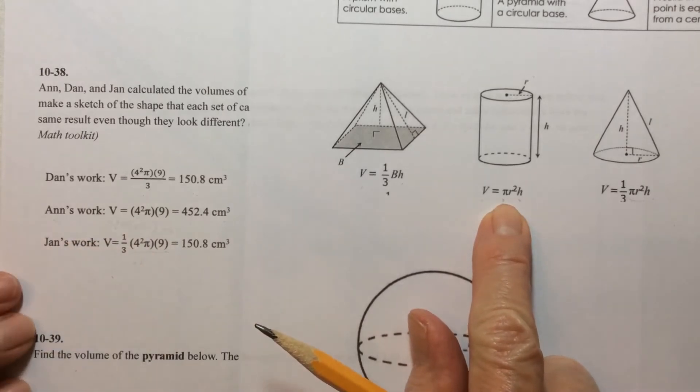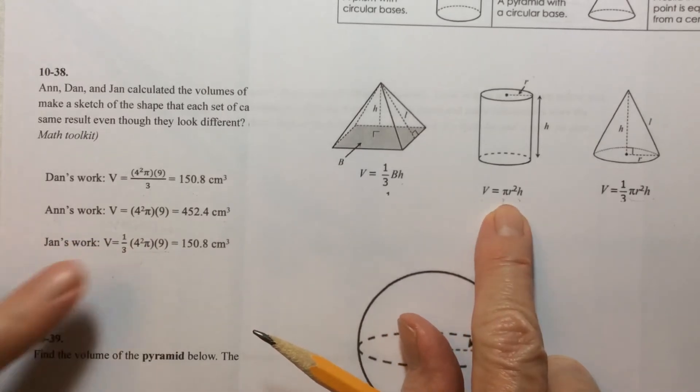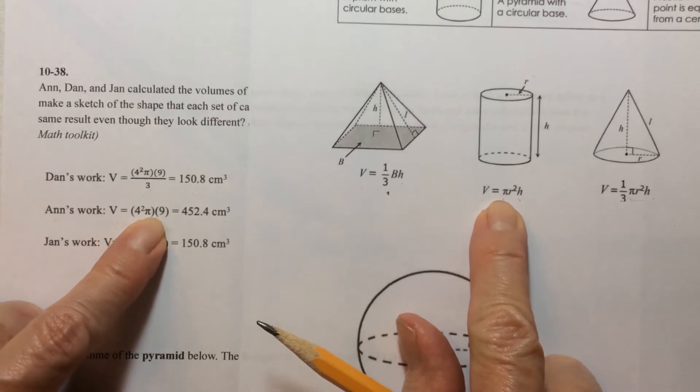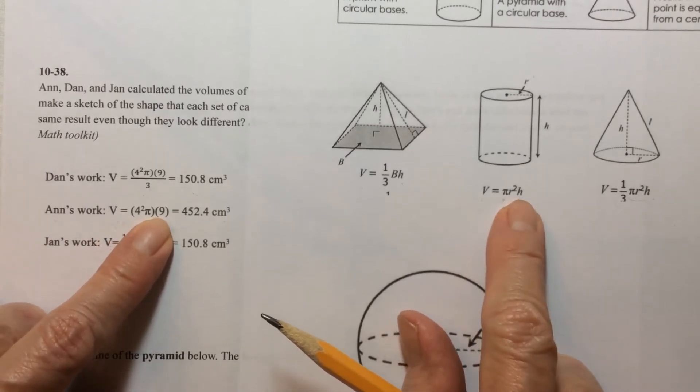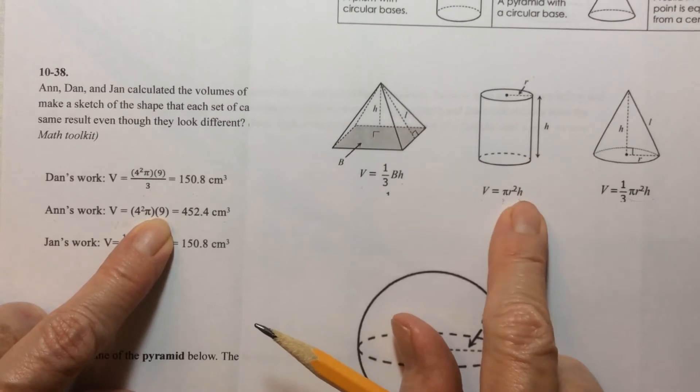So four squared is like r squared and pi of course is the same and then the nine is like the h.